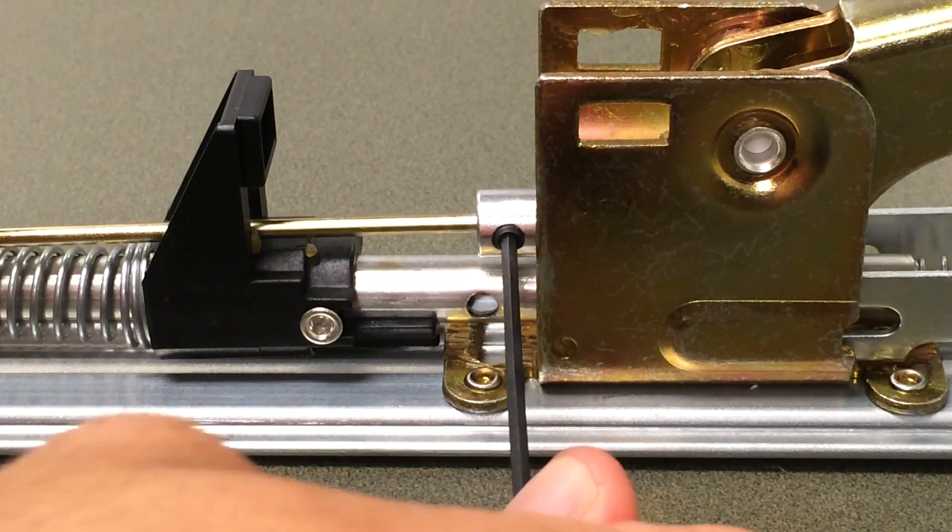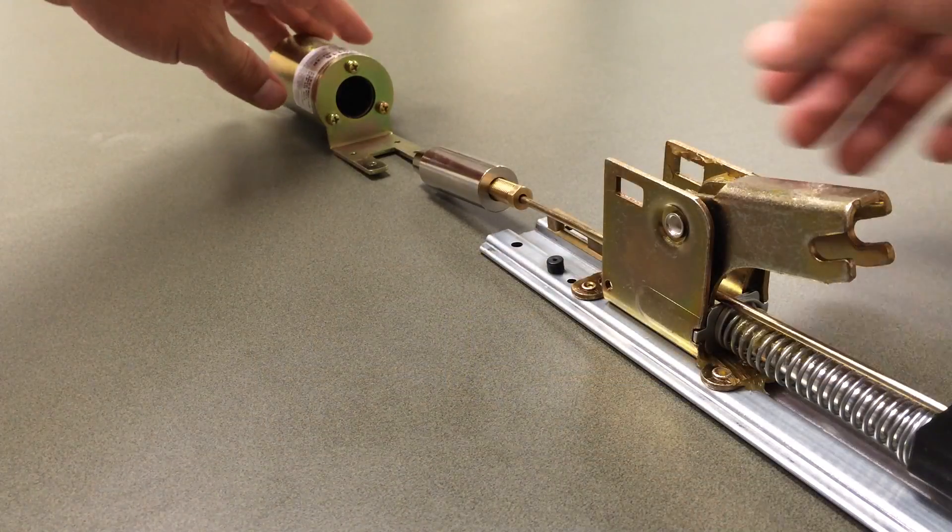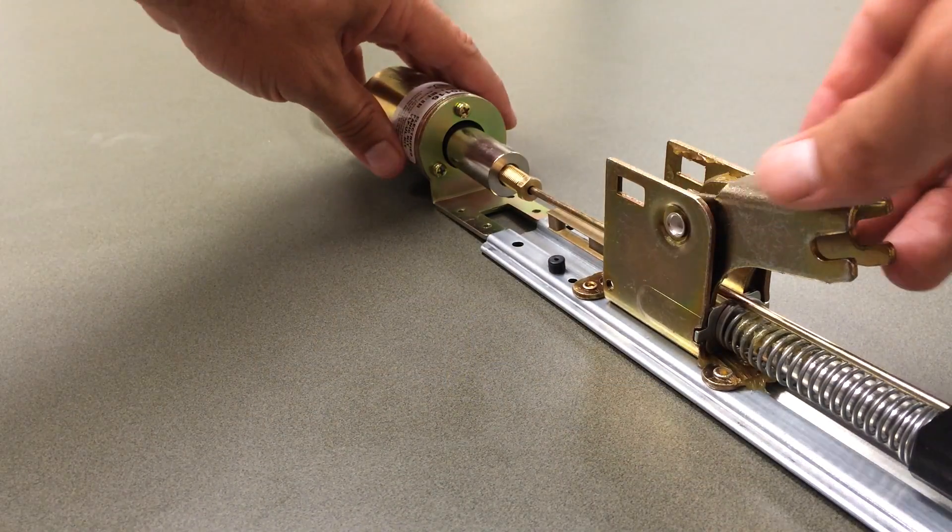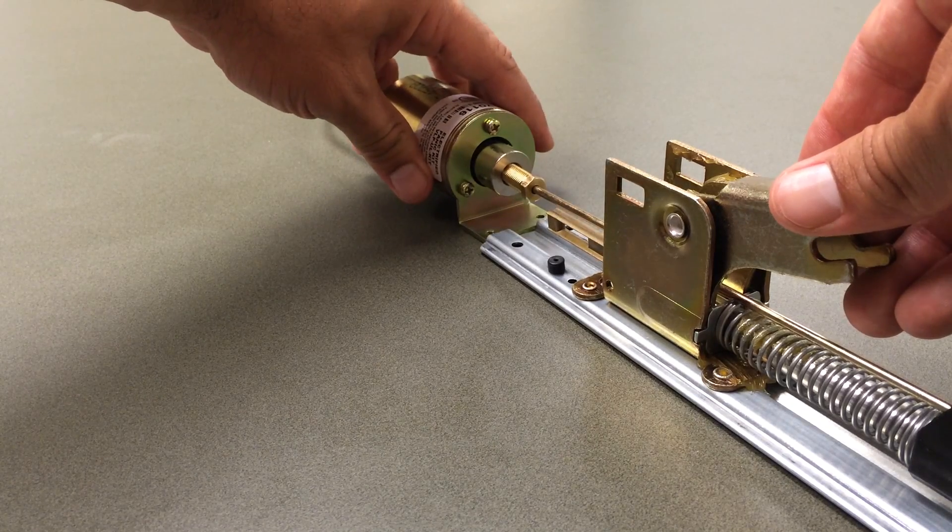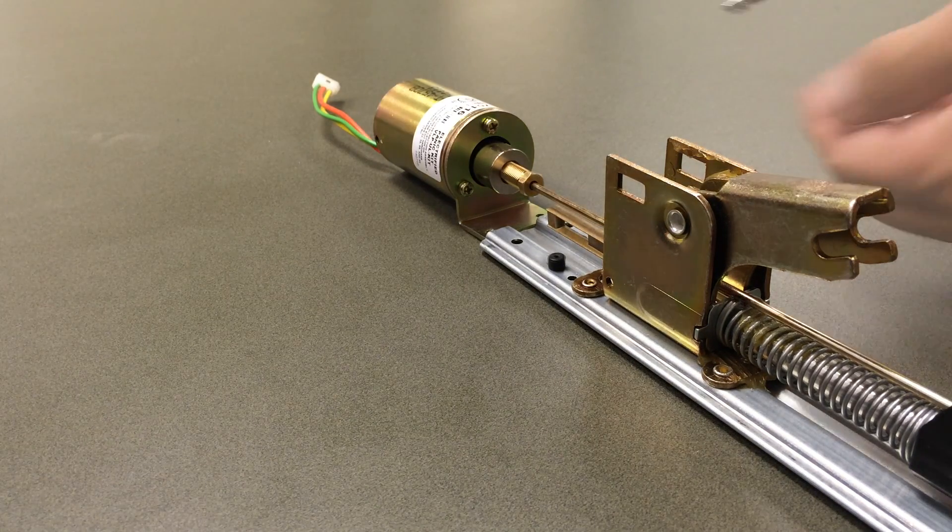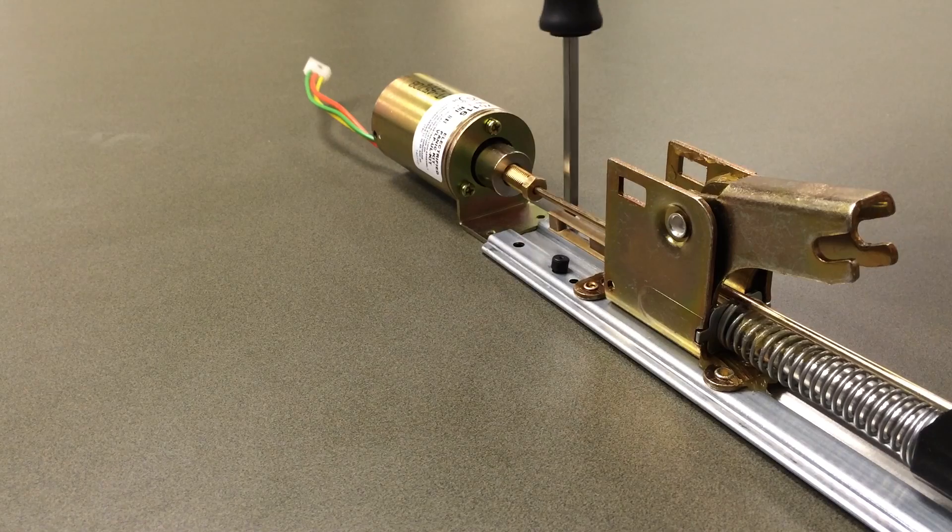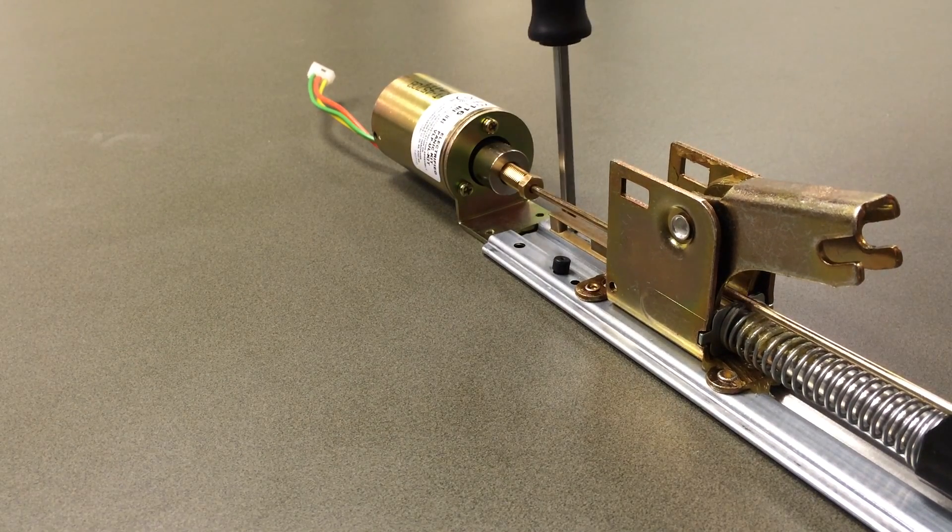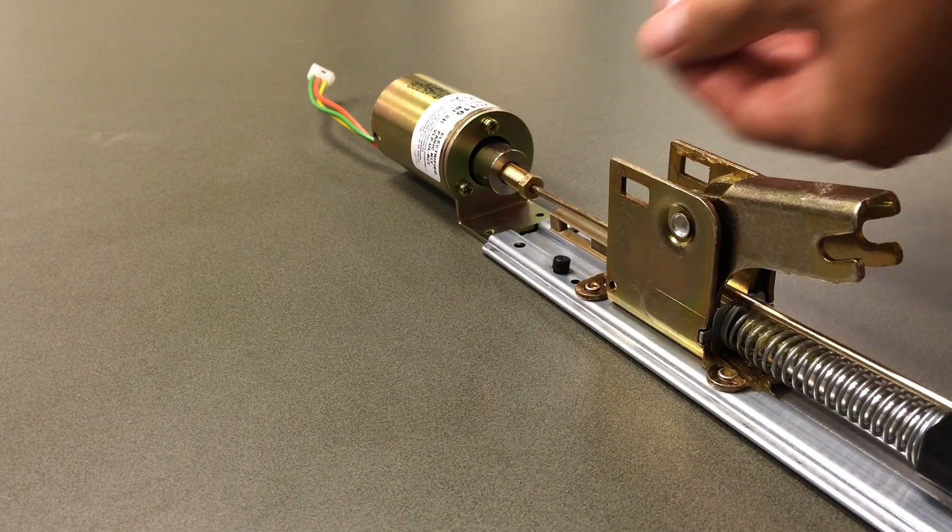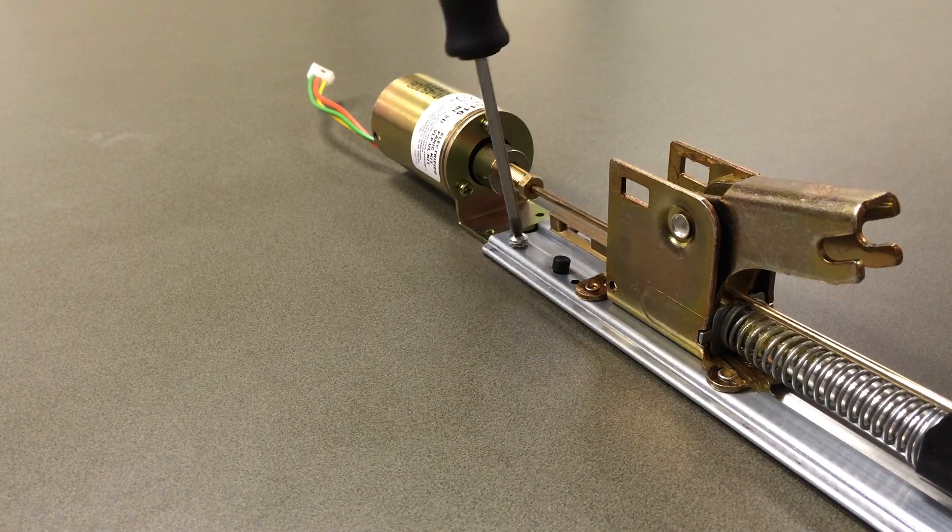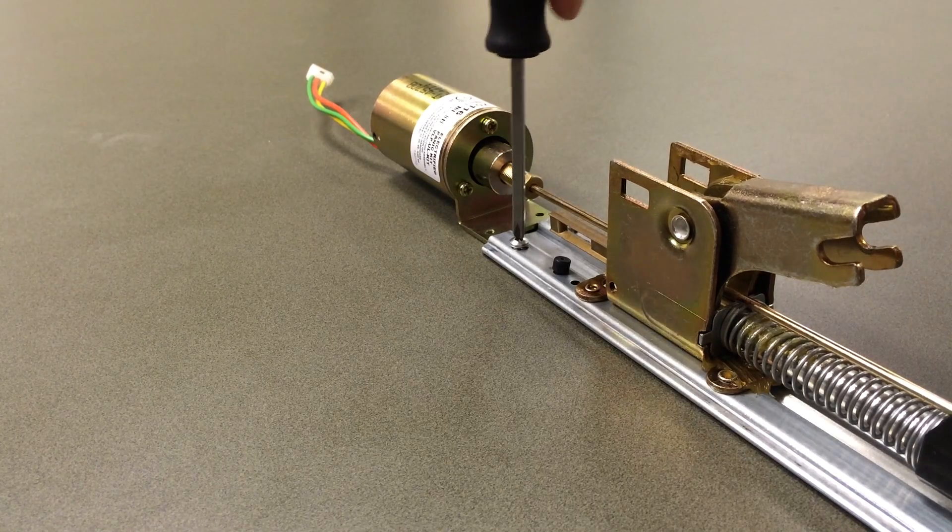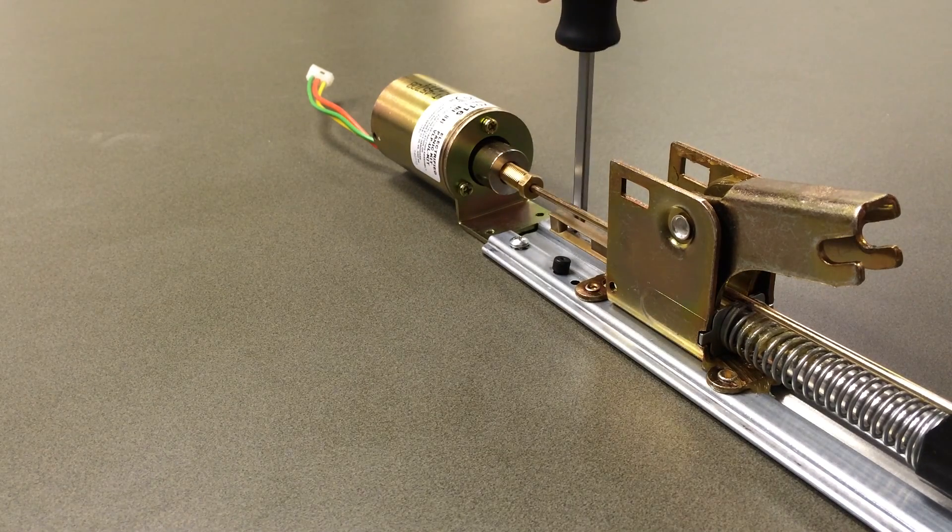Once our hex screw is good and secure, we're going to grab our solenoid. Make sure that you put the plunger in the middle as you're sliding it up into the base plate. It's going to fit nicely in those grooves there. When the holes line up, grab our solenoid mount screws. You can either tighten these with a Phillips head screwdriver or drill.